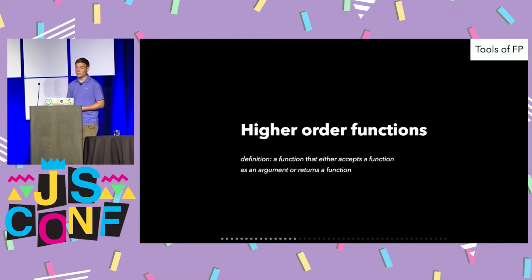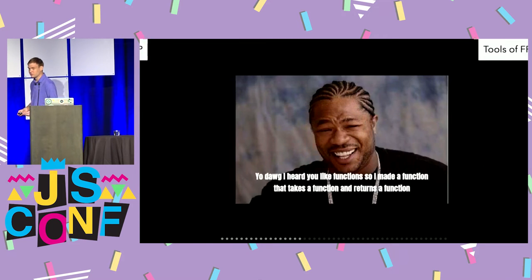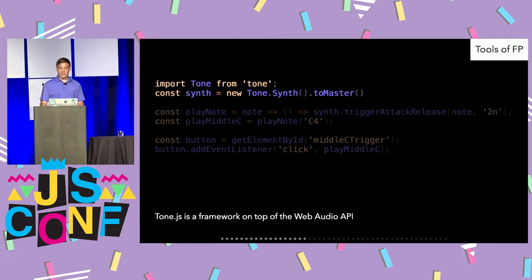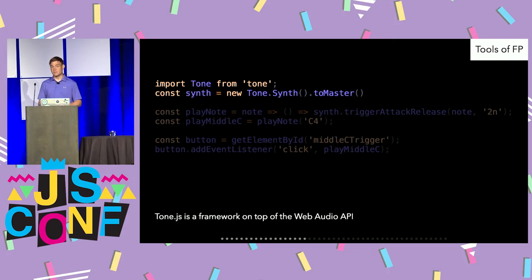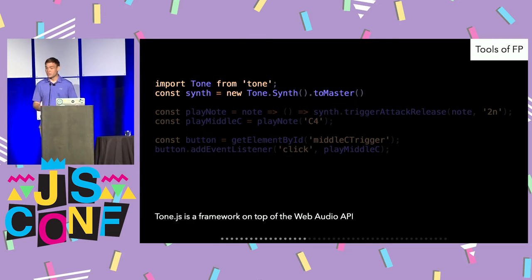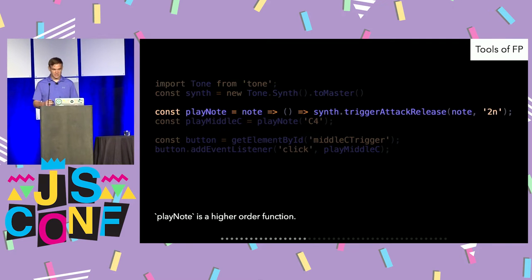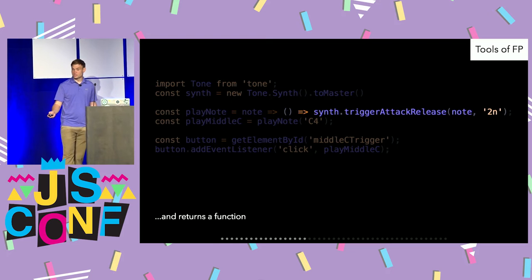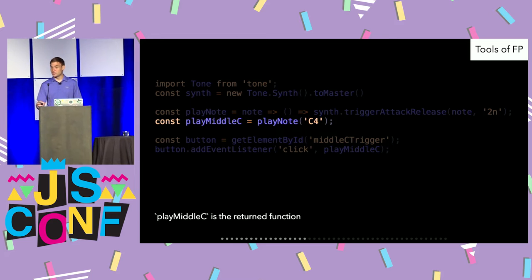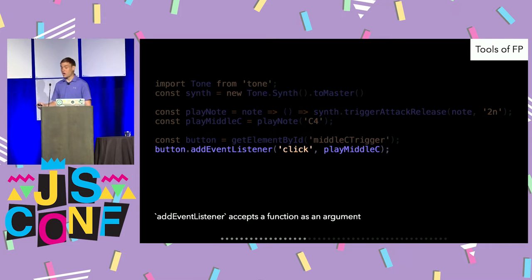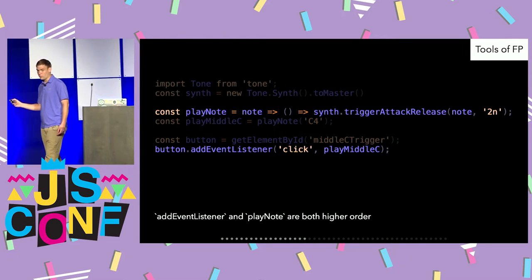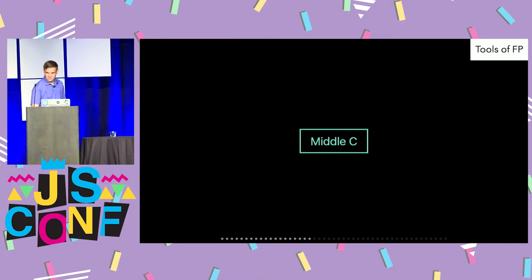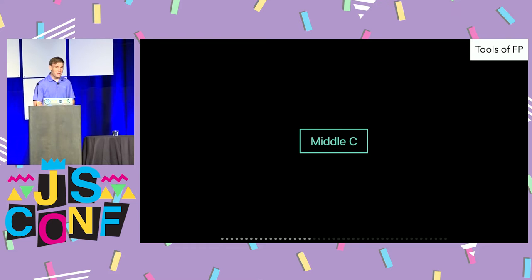Higher order functions are functions that either accept a function as an argument or return a new function. Here's an example using Tone.js, a framework on top of the Web Audio API. The Web Audio API itself is very low level, and Tone.js helps abstract it to be a little easier. PlayNote here is a higher order function — it accepts a note and returns a new function. PlayMiddleC is the result of PlayNote and is the new function. addEventListener accepts a function as an argument. So addEventListener and PlayNote are both higher order — PlayNote because it returns a function, addEventListener because it accepts one.